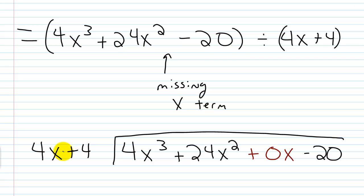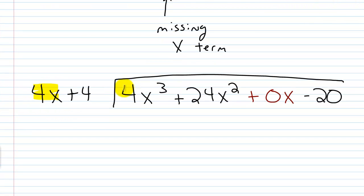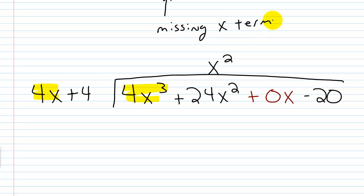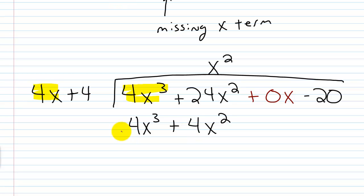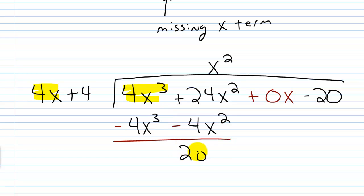Now we're just going to divide like we normally have. We take the leading term into the leading term. So 4x goes into 4x cubed x squared times. The x squared, keeping place value in mind, goes right here where the x squared column is. Now we multiply: x squared times 4x is 4x cubed, and x squared times 4 is plus 4x squared. We're subtracting this away, so we change the sign of each term — this becomes negative and this becomes negative. Adding: 4x cubed minus 4x cubed is 0, and 24x squared minus 4x squared gives me 20x squared.